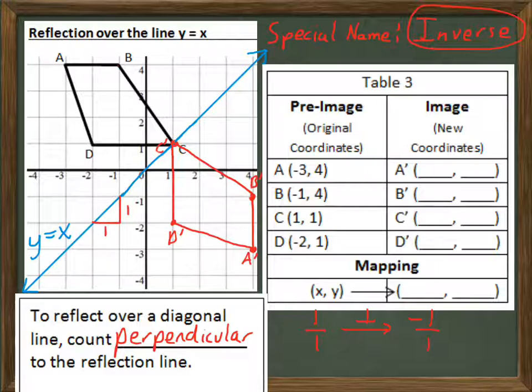Let's record the coordinates and see what happens. A prime is 4, negative 3. B prime is 4, negative 1. C is still 1, 1 because it didn't move. And D is 1, negative 2. Do you see what happened to the coordinates here?